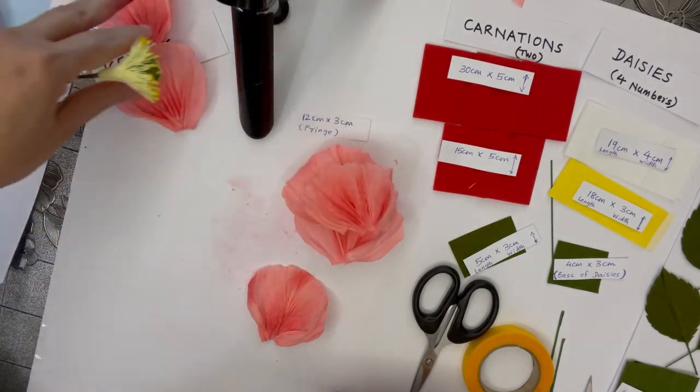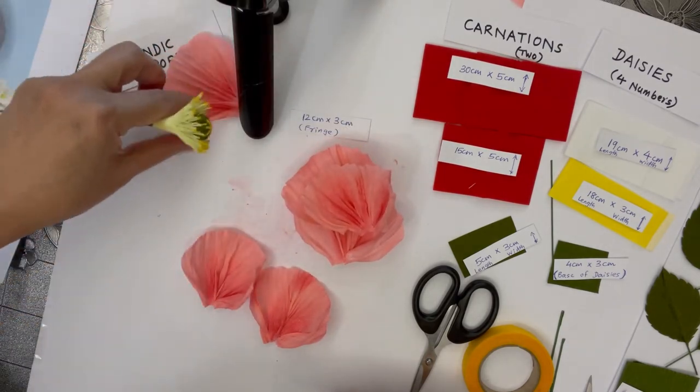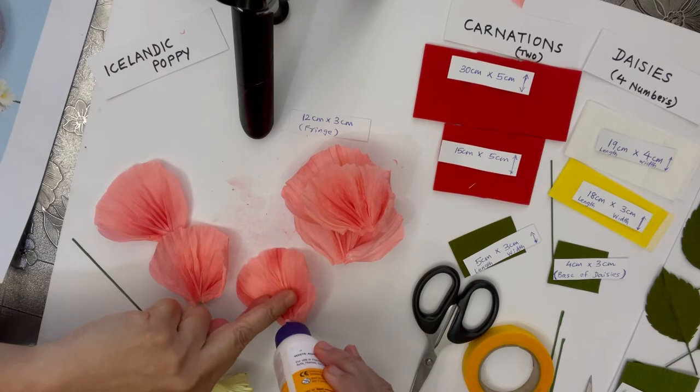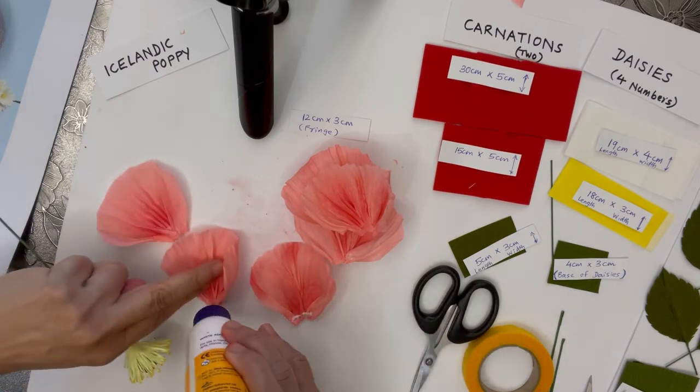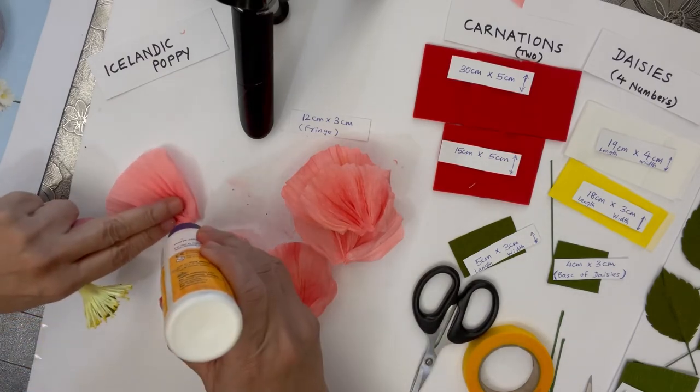These three are large, these three are small. So once you have one, two, and three small petals.